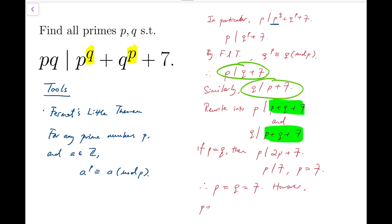p squared is then equal to 49, and 49 does not divide 7 to the 7 plus 7 to the 7 plus 7, because of this little 7. 49 is a factor of 7 to the 7, but not this 7. So this divisibility does not work.